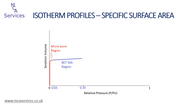Once the micropores are filled, further increases in relative pressure will result in the adsorbate gradually covering the external surface of the sample and forming a layer coating the internal walls of larger mesopores and macropores. This region is used to determine the specific surface area of the sample, most commonly using the BET model — more information can be found in our presentations on BET surface area. Essentially this portion of the isotherm covers the approximate range 0.05 to 0.35 relative pressure, representing the classical BET range in which monolayer adsorption occurs, which is critical to the calculation of BET surface area.